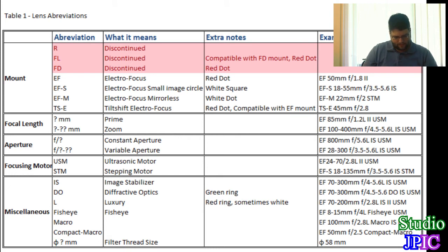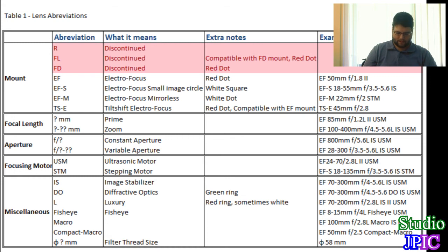Then you have the DO, or diffractive optics. I believe they've only made one DO lens so far. It uses a very specialized glass element inside the lens that makes the lens smaller and lighter — which is really great.